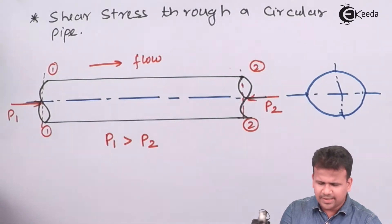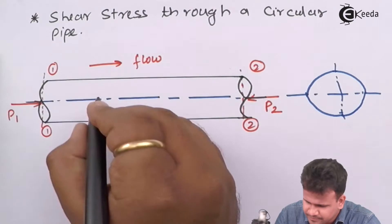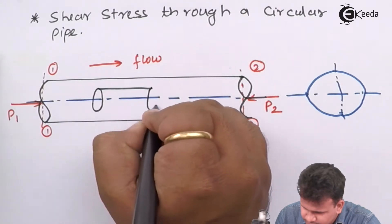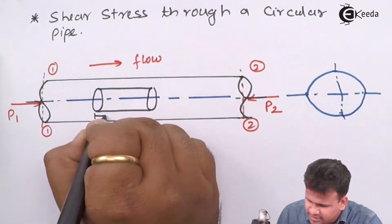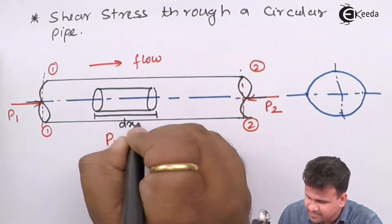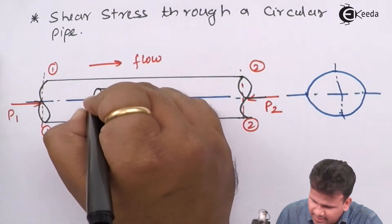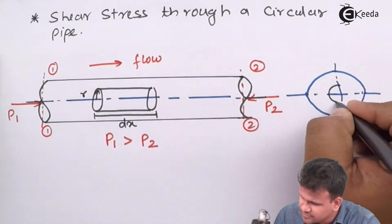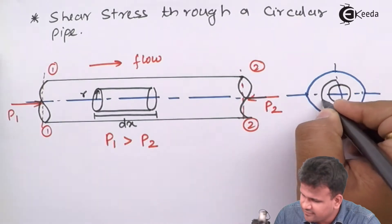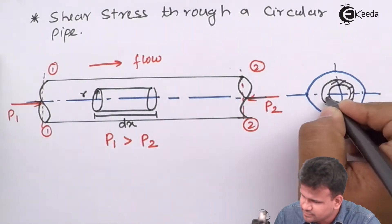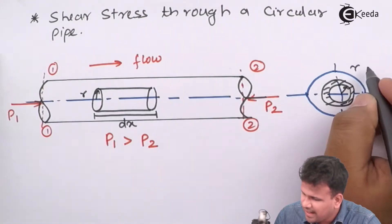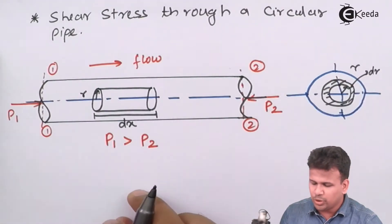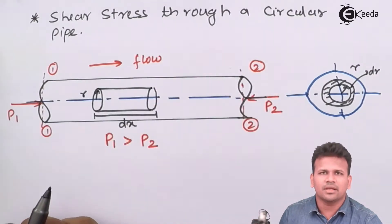So let us take one control volume in this entire pipe. Let us name this control volume as having a displacement of dx, a radius at a distance r, and a thickness of dr in the cross-sectional area. So radius is small r and its thickness is dr. We have defined this entire control volume in the form of cylindrical coordinates.